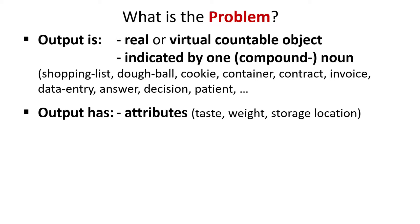Neither a cookie nor a shopping list itself can be a problem, nor can other products and services. These outputs, however, can have problems if their attributes deviate from requirements.